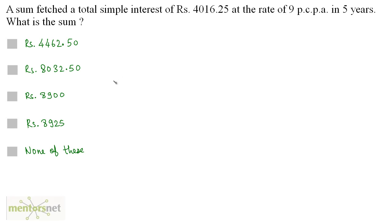A sum fetched a total simple interest of Rs. 4016.25 at the rate of 9% per annum in 5 years. What is this sum? Well, this sum is the principal amount and you have been given the value of simple interest. That's 4016.25. So it equals PNR upon 100. P is, let it be P the sum, times N is 5, times the rate is 9, upon 100.